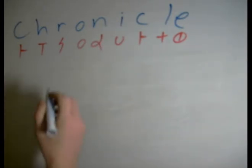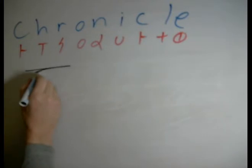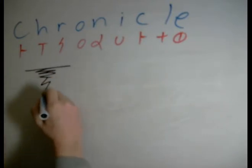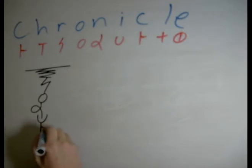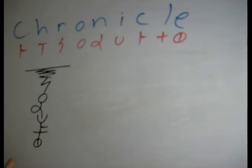So, chronicle, the simplest possible combination. C-H-R-O-N-I-C-L-E. Okay, so we've got chronicle. First of all, let's look at what double letter combinations are important here.